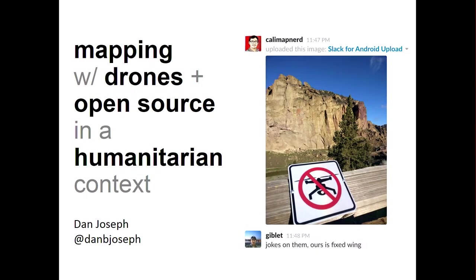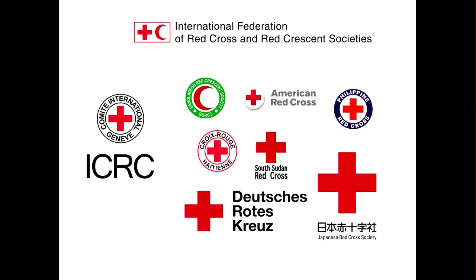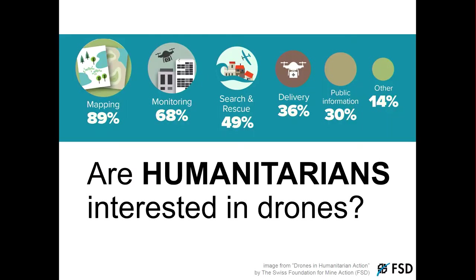Hi everyone, thanks for coming. I'm giving a talk on mapping with drones and open source in a humanitarian context. I'm on a small team of GeoNerds at the American Red Cross, focused on working internationally with other Red Cross and Red Crescent societies. We support disaster resilience, response and recovery programs, helping to create, store and use data to increase the efficiency and impact of our work. Because of our backgrounds, we tend to have a bias towards geospatial data and interesting tech, and recently we've become interested in drones.